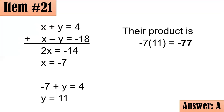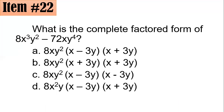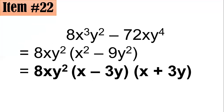Item 22: What is the complete factored form of 8x cubed y squared minus 72xy to the fourth? In factoring, it's important to find the GCF first. For 8 and 72, the GCF is 8.